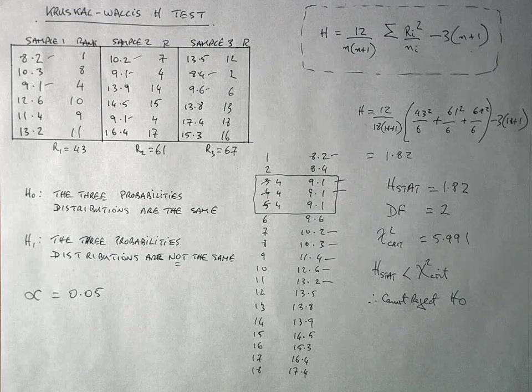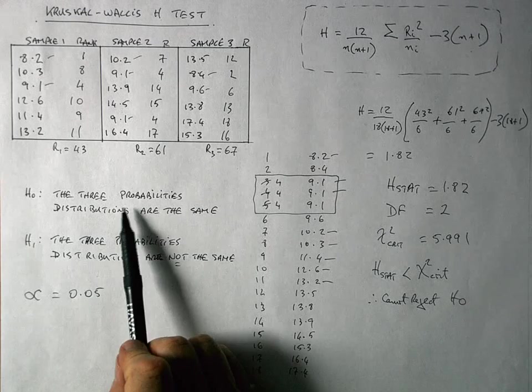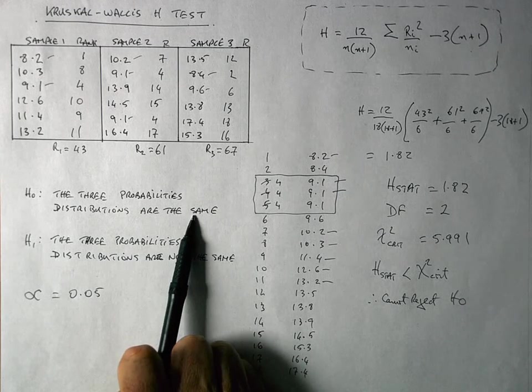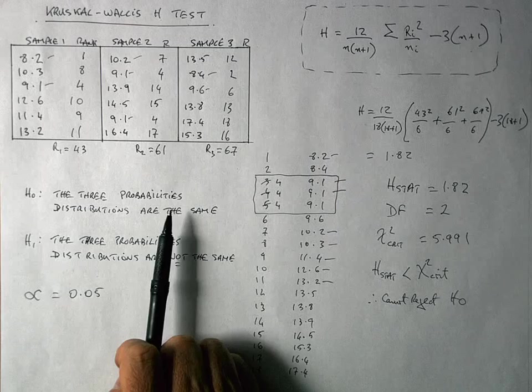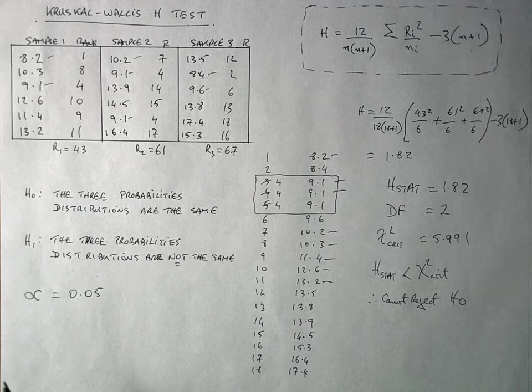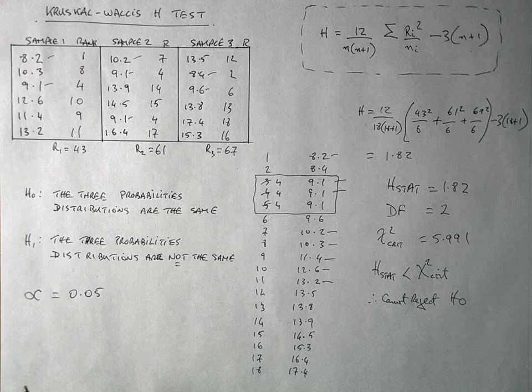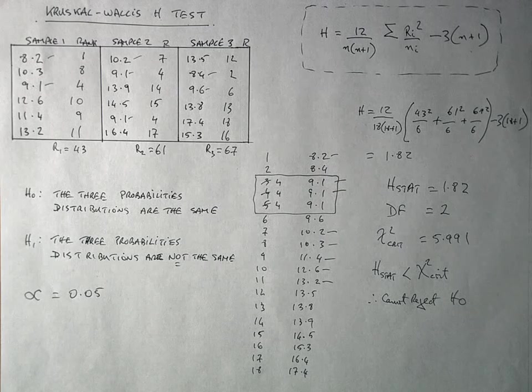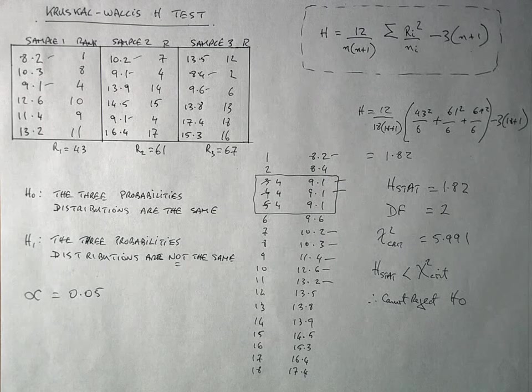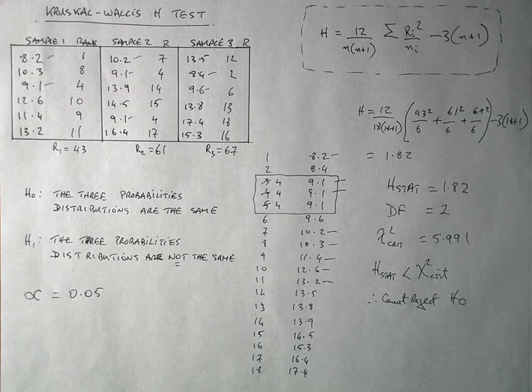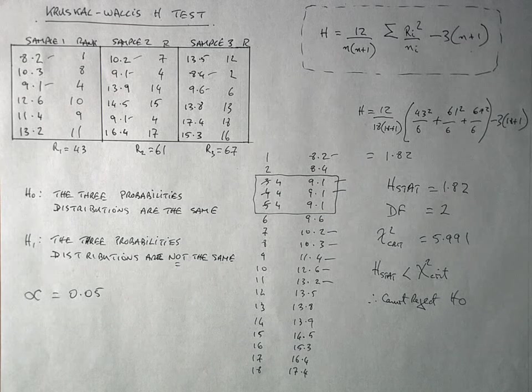Therefore, I cannot reject H0. So in this case here, I'm failing to reject the null hypothesis that the three probability distributions are the same. So in other words, I conclude that there is no difference in the distributions between sample one, sample two and sample three. In this particular instance here, I have not found a difference between my groups. So that's how you conduct a Kruskal-Wallis H test by hand. I hope you found this video useful. Thank you for your attention.